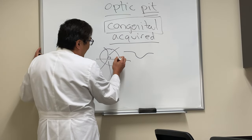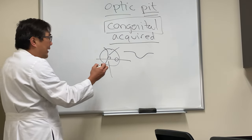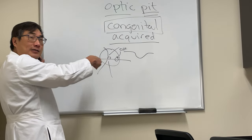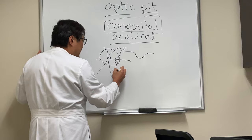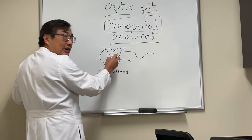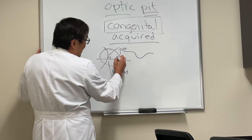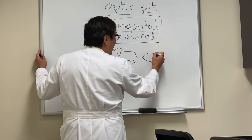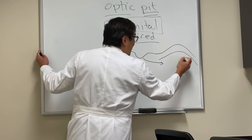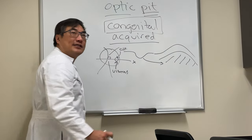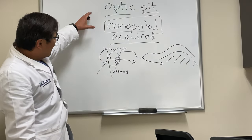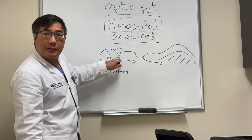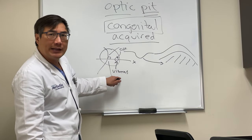The issue is fluid can go down that hole. It's still not clear exactly whether that's cerebrospinal fluid coming out or vitreous going in. The reason you need to know it is if fluid goes down this hole, it can spread, and if it goes into your fovea you'll get a serous detachment. The way the pit causes vision loss is from serous macular detachment — the fluid from here, whether it's CSF or vitreous, is still debated.